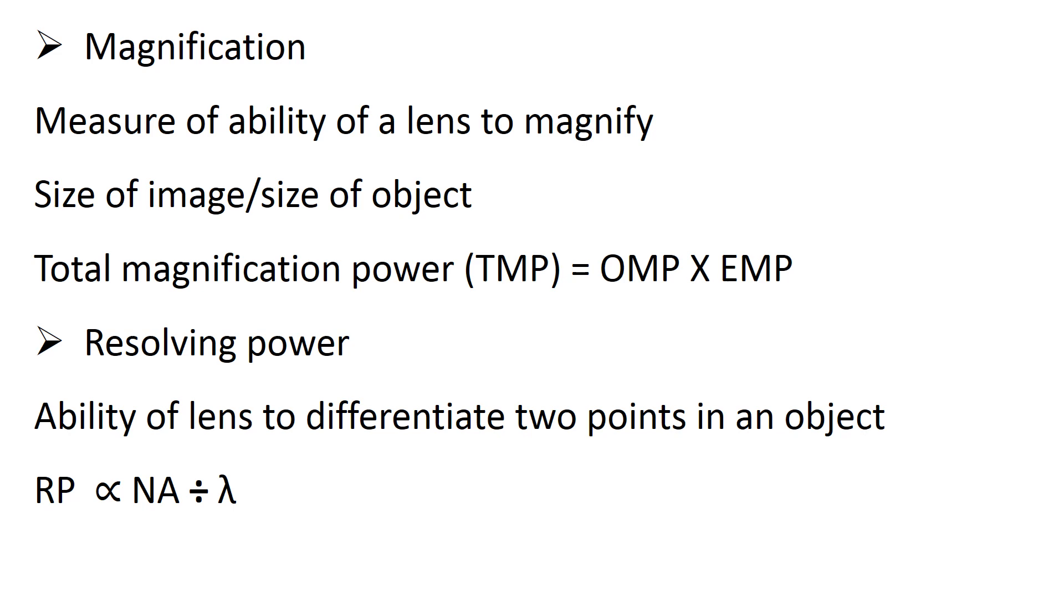Resolving power is the ability of a lens to differentiate two points in an object. Simply, it is the power of a lens to improve the clarity of the image. The factors affecting resolving power are numerical aperture and wavelength. Resolving power is directly proportional to numerical aperture and inversely proportional to wavelength.